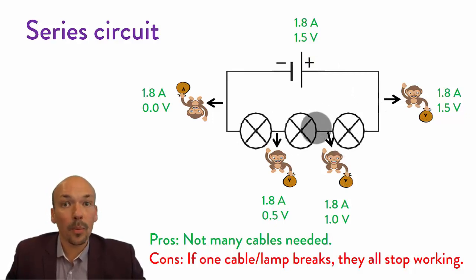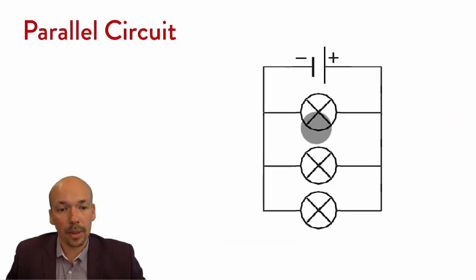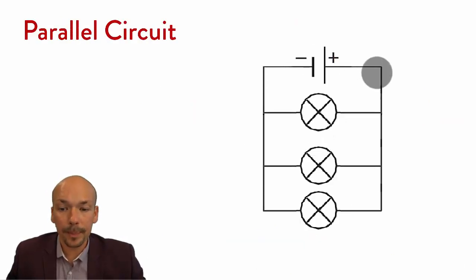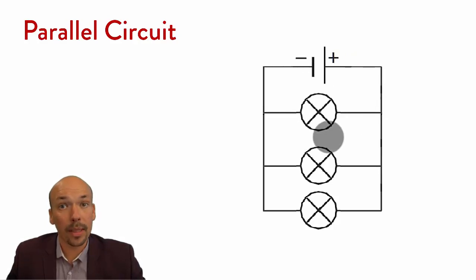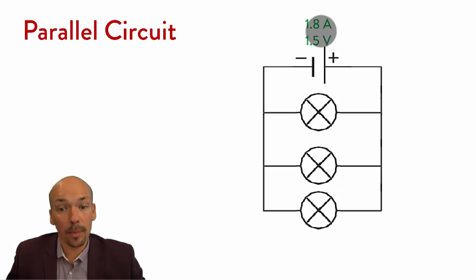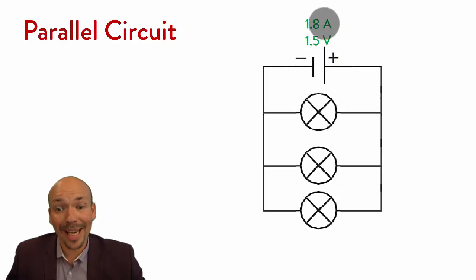To counter that, we have parallel circuits. Parallel circuits look like this — instead of one circle, you now have three different circles. Again, we have the power source giving 1.8 amperes and 1.5 volts.